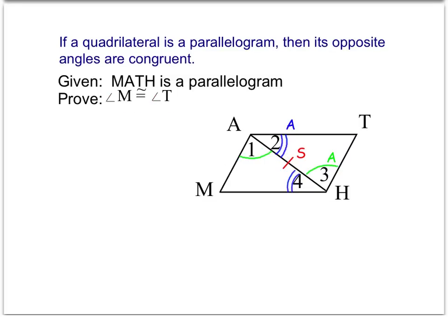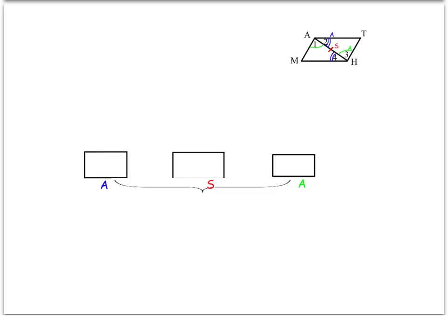Go ahead and mark that up. I always like to label the A's and the S's so that we make sure we get the correct theorem to put into our flow proof. Once we have that marked with angle-side-angle, we can start there. I like to start in the middle and put my three boxes there, and even label the ASA so I know what's going to be going into each box.